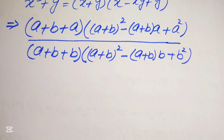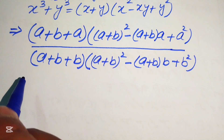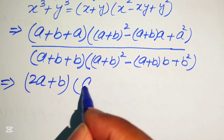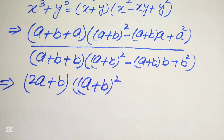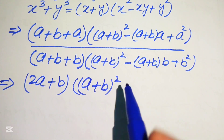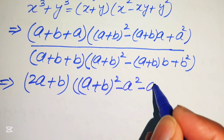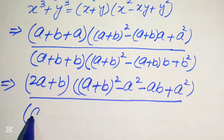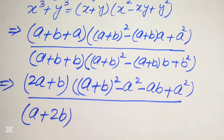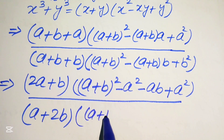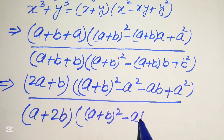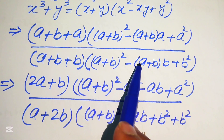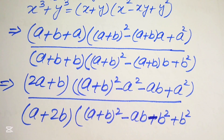Now we simplify by combining like terms. In the numerator: a plus a equals 2a, so we get (2a plus b) times [(a plus b) squared minus a squared minus ab plus a squared]. In the denominator: b plus b equals 2b, so we get (a plus 2b) times [(a plus b) squared minus ab minus b squared plus b squared].